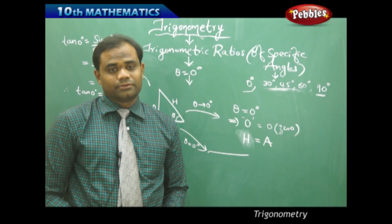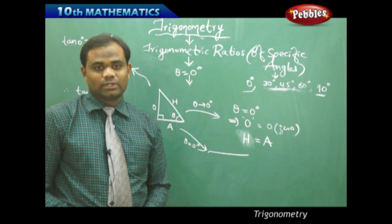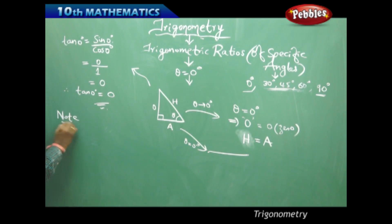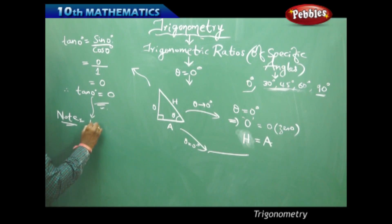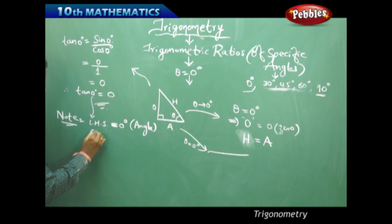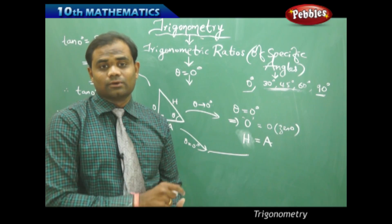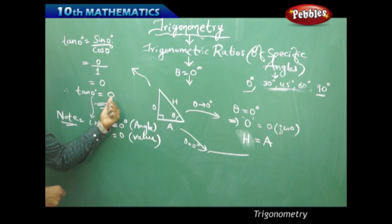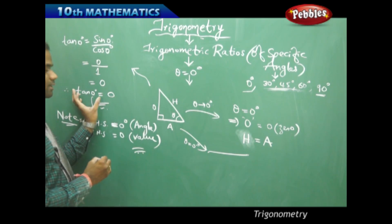We can similarly find the reciprocal ratios — cosecant, secant, and cot — using the same concept. An important note: when we say tan 0 = 0, the left-hand side 0 is an angle measured in degrees, while the right-hand side 0 is a value. These are not equal — the left-hand side 0 degrees is an angle, and the right-hand side 0 is a numerical value.